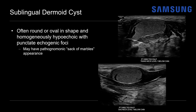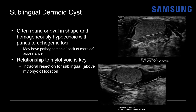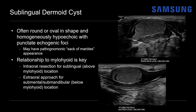When evaluating these masses on imaging, the relationship to the mylohyoid muscle is key for surgical planning. If the mass is above or superior to the mylohyoid — as in this case — it's sublingual in location and allows for intraoral resection. Since this is the patient's chin and this is the mylohyoid, the mass here is superior to the mylohyoid moving toward the oral cavity. However, if the mass is below the mylohyoid, that indicates it's in the submental or submandibular location, which would require an extraoral approach.